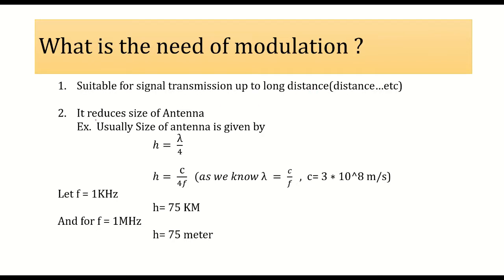The second need is it reduces the size of the antenna. Generally, the quarter-wavelength height of an antenna is defined by H = λ/4, where λ is the wavelength, defined as the ratio of velocity of light to frequency: λ = (3 × 10⁸) / f. For example, if we have a low frequency signal of 1 kilohertz and put this value into the equation, we get an antenna height of 75 kilometers, which is not practically possible.